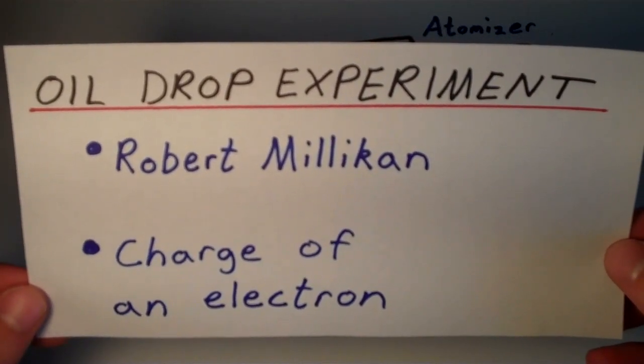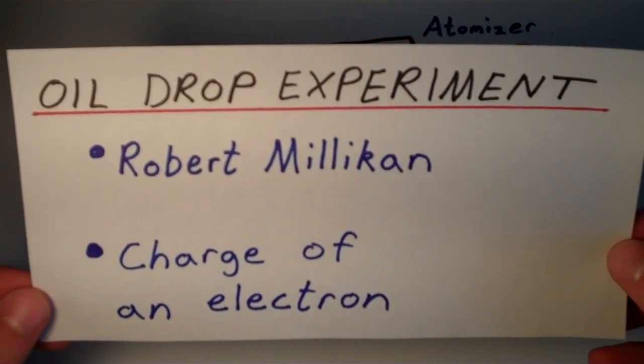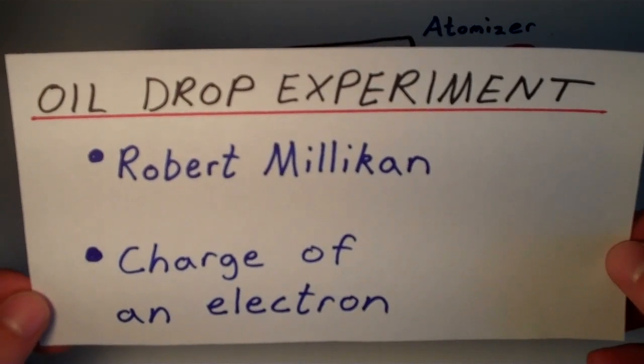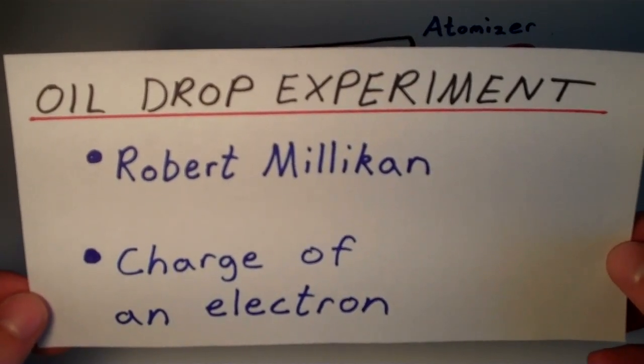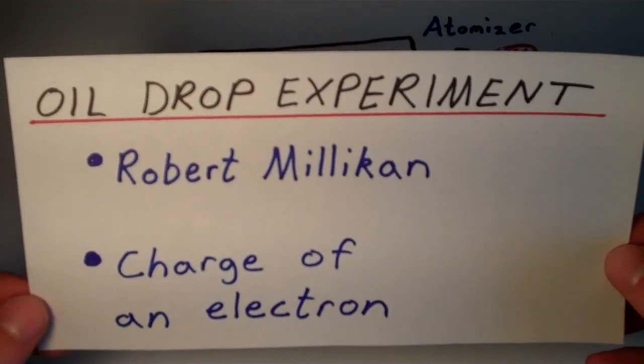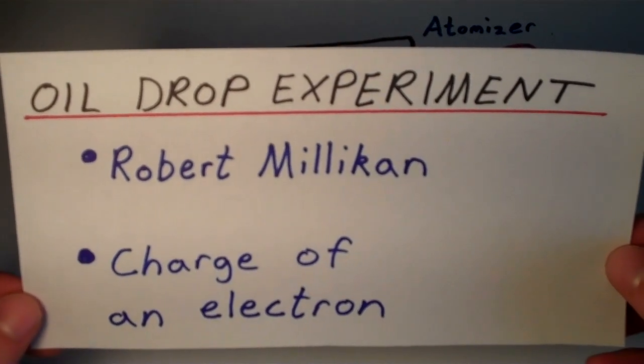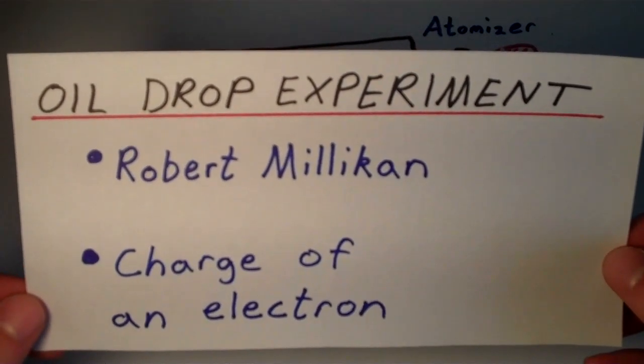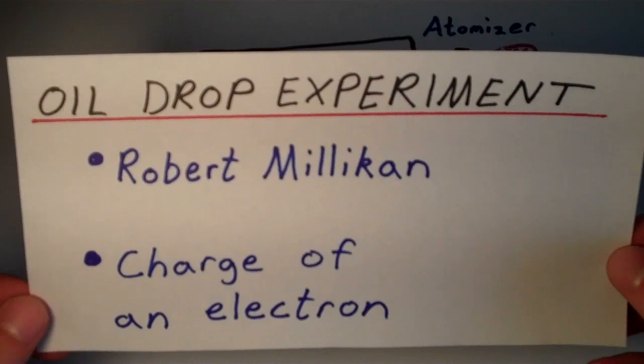Alright, so now we're going to go over the oil drop experiment. This experiment was conducted by Robert Millikan in the early 1900s, so about 100 years ago, which, if you think about it, really isn't that long ago. And what this experiment determined was the charge of an electron, the charge of a single electron.